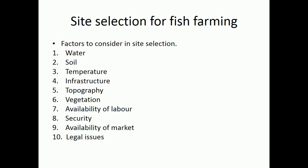Site selection for fish farming. Factors to consider in site selection: water, soil, temperature, infrastructure, topography, vegetation, availability of labor, security, availability of market, and legal issues.